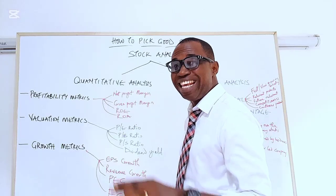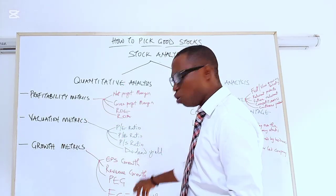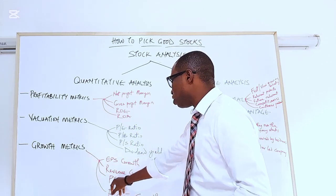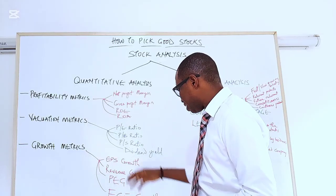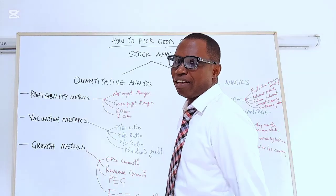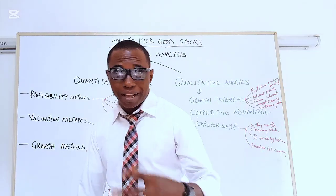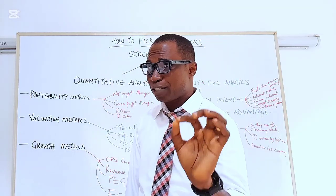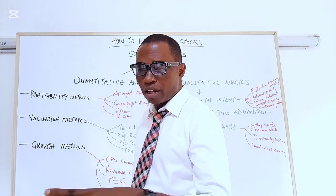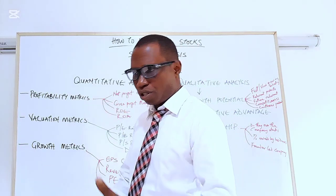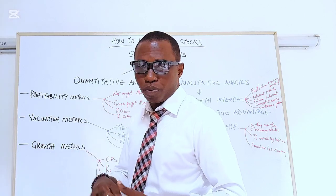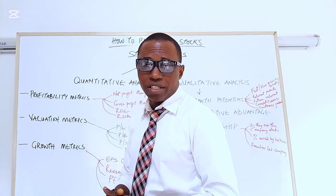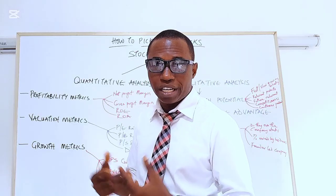The third growth metric is the PEG ratio — the price-to-earnings-growth ratio — which you should look at in the context of growth as well. The last metric on the list is free cash flow growth. How has free cash flow grown over time — is it declining or growing? Personally, I prefer using cash flow from operating activities minus capital expenditure as my FCF metric.